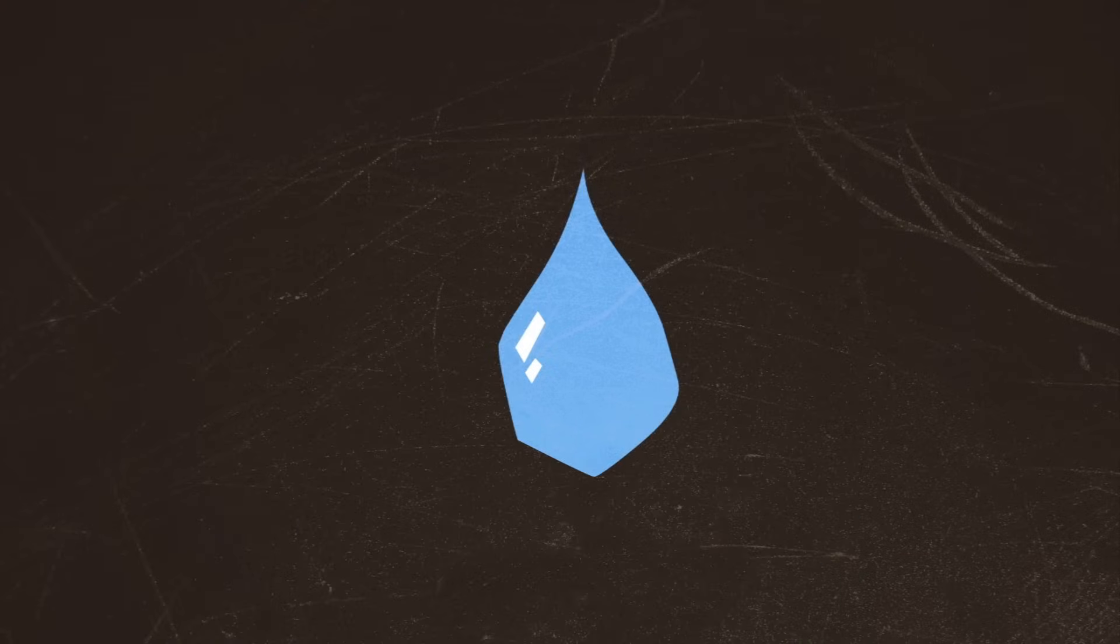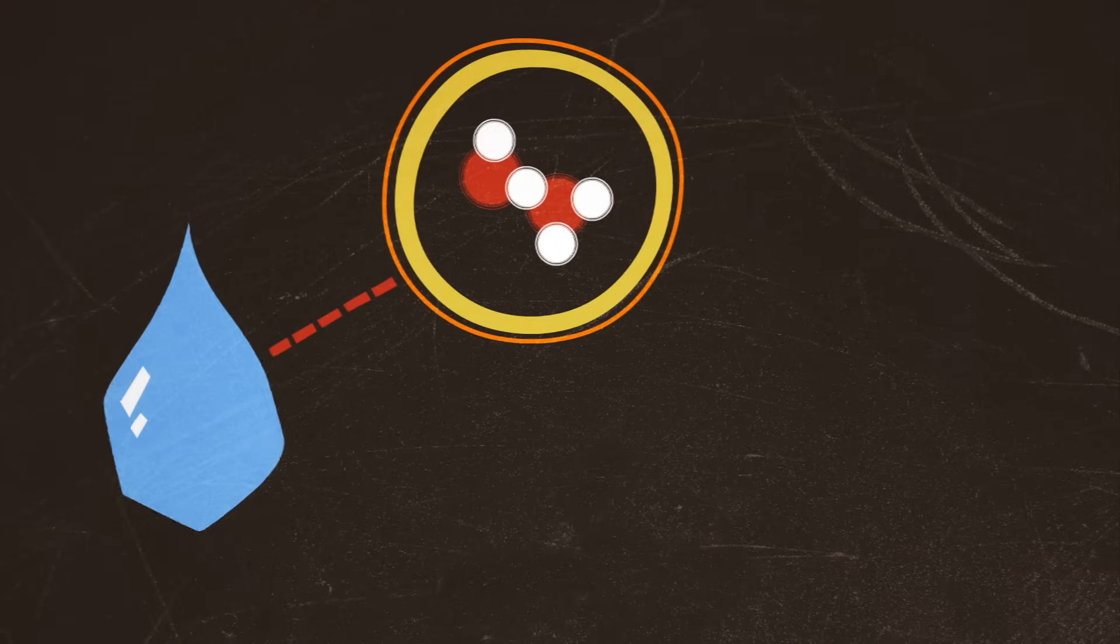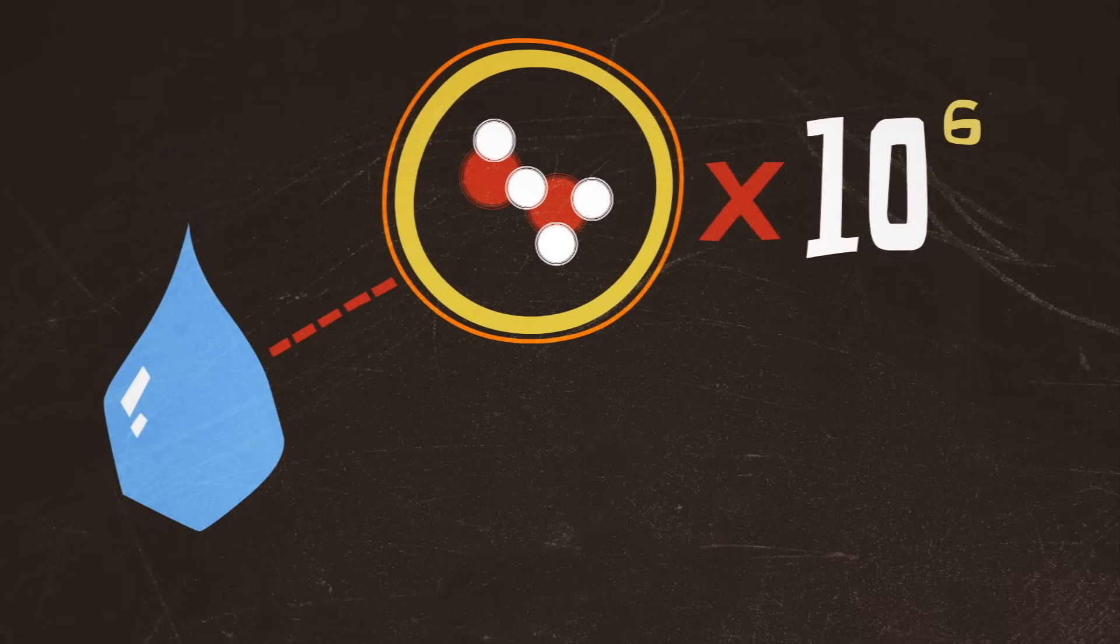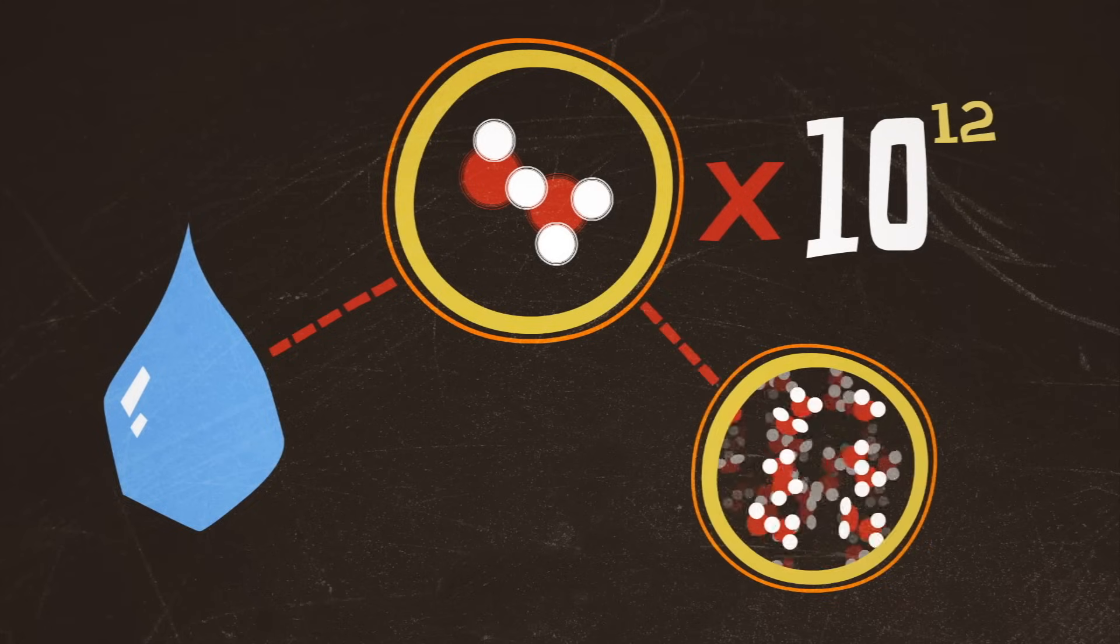In a single drop of water, hydrogen bonds form extended networks between hundreds, thousands, millions, billions, trillions of molecules. And these bonds are constantly breaking and reforming.